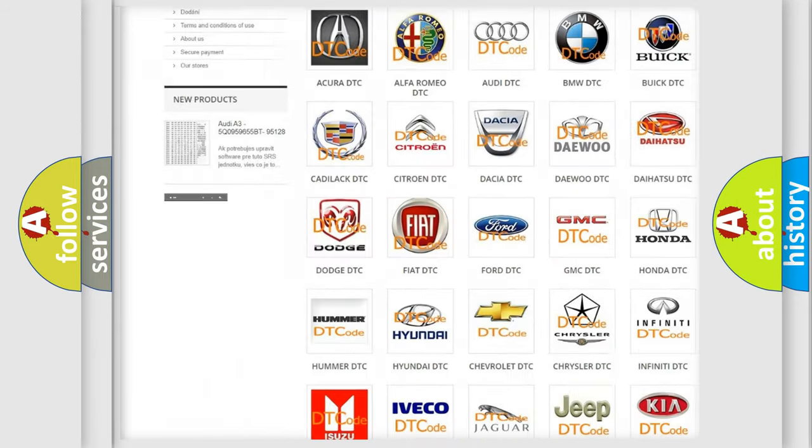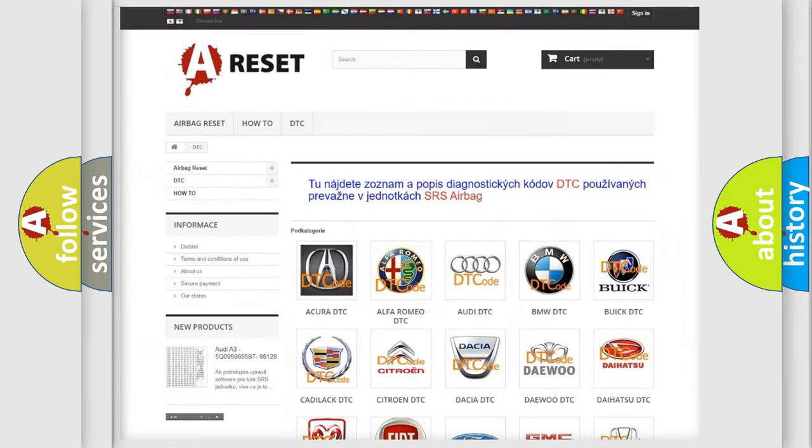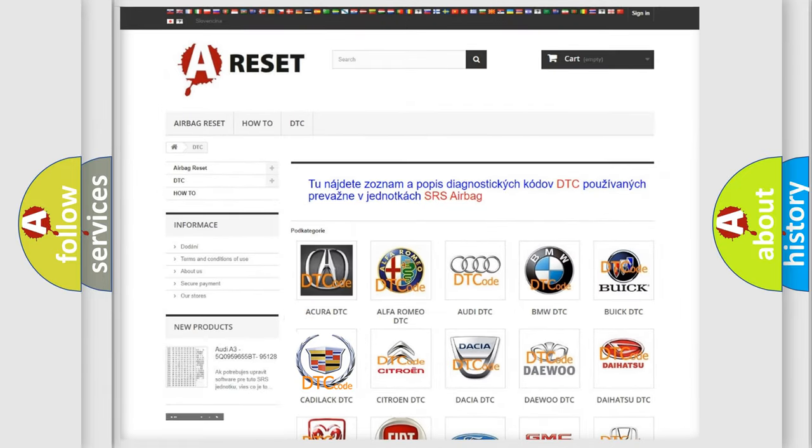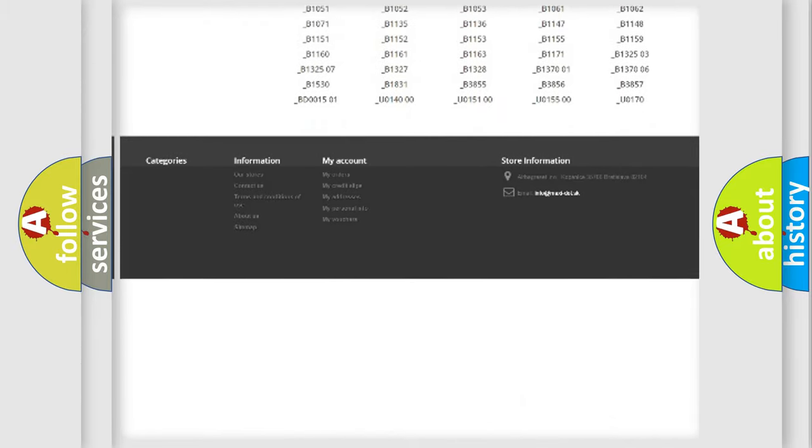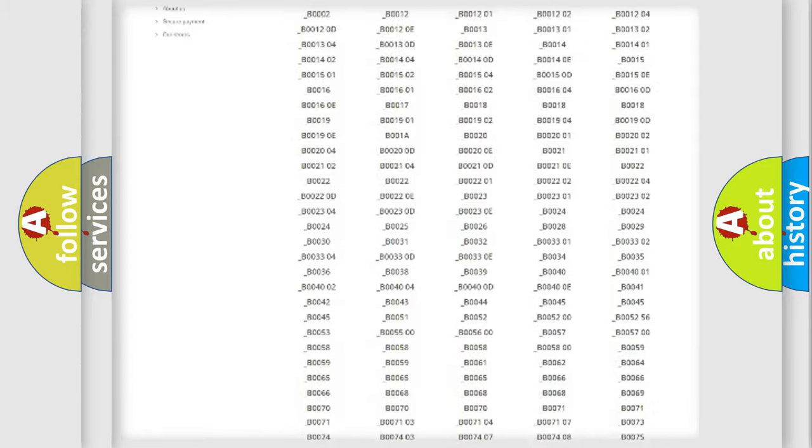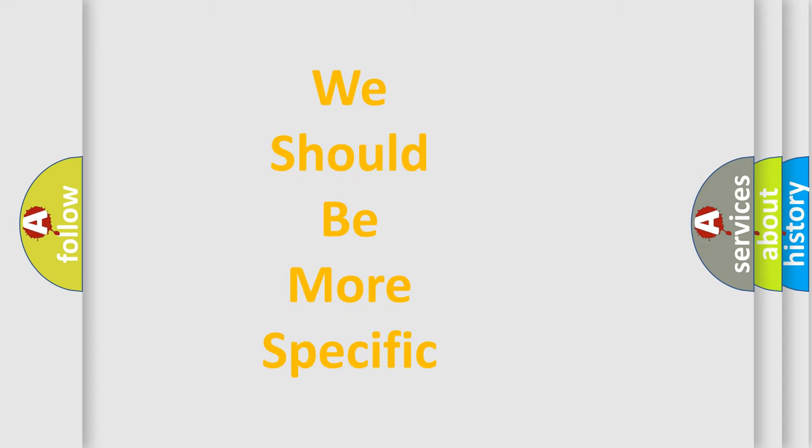Our website airbagreset.sk produces useful videos for you. You do not have to go through the OBD2 protocol anymore to know how to troubleshoot any car breakdown. You will find all the diagnostic codes that can be diagnosed in Cadillac vehicles, and many other useful things. The following demonstration will help you look into the world of software for car control units.